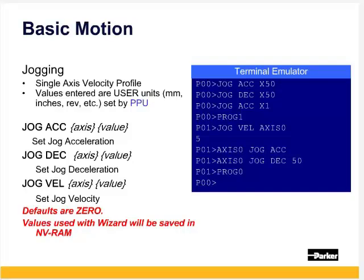Single axis motion is done with the jog commands. The units are the same set in the configuration wizard, which sets the axis's pulses per unit PPU. Jogging uses jog ACC for the acceleration ramp, jog DEC for jog deceleration, and jog VEL for setting the jog velocity. The defaults are zero, so for the terminal window, we can type these in.